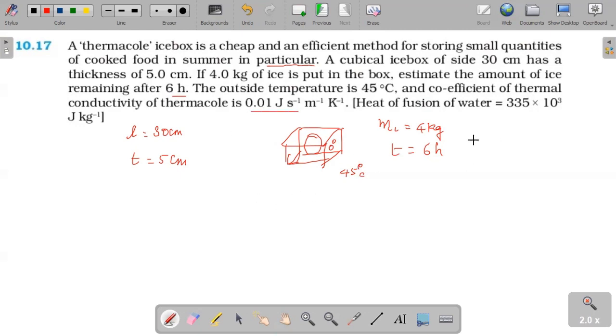The outside temperature is 45 degree Celsius, inside 0 degree Celsius, and the coefficient of thermal conductivity is given as K, coefficient of thermal conductivity is 0.01 joules per second per meter per Kelvin. The formula for amount of heat energy passing through the conductor is K into A into delta T by del X.